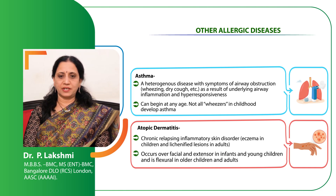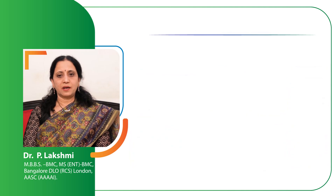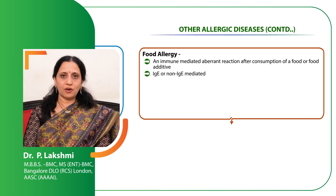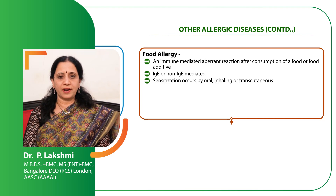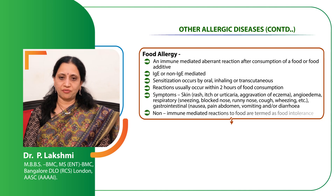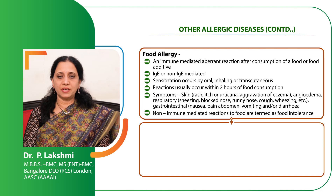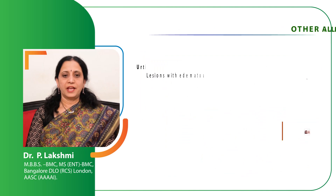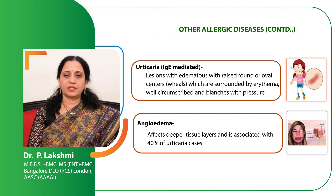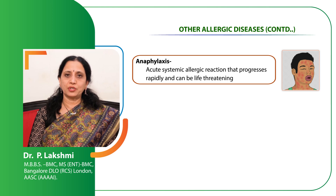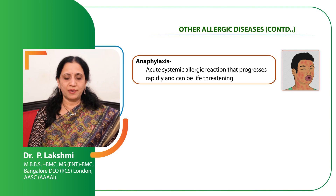Food allergy is an immune-mediated aberrant reaction after consumption of a food or food additive. It can be IgE or non-IgE mediated. Sensitization occurs by either oral ingestion or contact with the food substance. Reactions usually occur within 2 hours after consumption, sometimes within a few minutes. Common allergens include gluten, soya, peanut, fish, mustard, certain types of eggs, and celery. Angioedema can affect deeper tissue layers and is often associated in about 40% of urticarial patients. Anaphylaxis is a serious systemic reaction that progresses rapidly after exposure to an allergen and can be life-threatening. It is very important to diagnose anaphylaxis rapidly and institute treatment promptly.